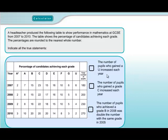We take them one by one, starting with statement one: the number of pupils who gained a U grade increased each year. Here's the U grade and here are the years. We've got 6%, but remember these are all percentages — so 6% out of 180 pupils, 5% out of 200 pupils, and so on. We just have to evaluate those percentages.